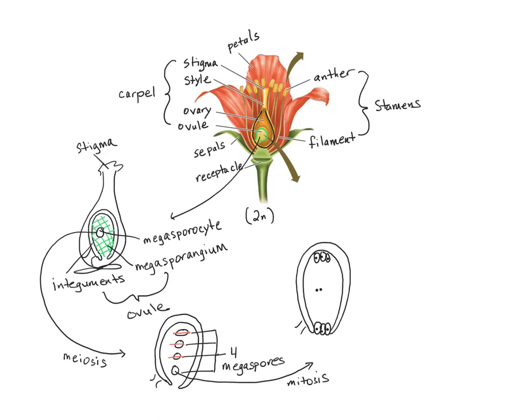The parts of the megagametophyte have specific names. This first cell here is the egg. It's flanked by two cells which are called synergids. The middle cell is the central cell, and you should notice that there are two haploid nuclei there. So its ploidy isn't N, it's N plus N. And then last but not least, we have three antipodal cells.